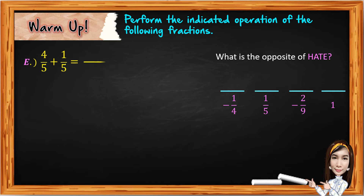For the solution, we're going to add the numerators, then copy the common denominator, then perform the indicated operation. Four plus one gives us five over five, and five divided by five is equal to one. So we write E above one.